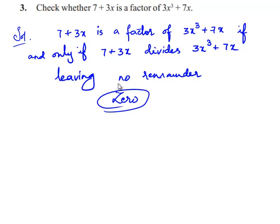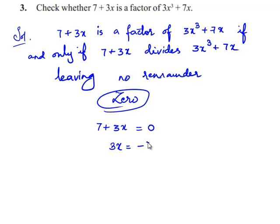So, first let us find the remainder for the given polynomial. In order to find the remainder, let us use the Remainder Theorem. First, equate the linear polynomial to 0 — we get 3x is equal to minus 7, and x is equal to minus 7 by 3.